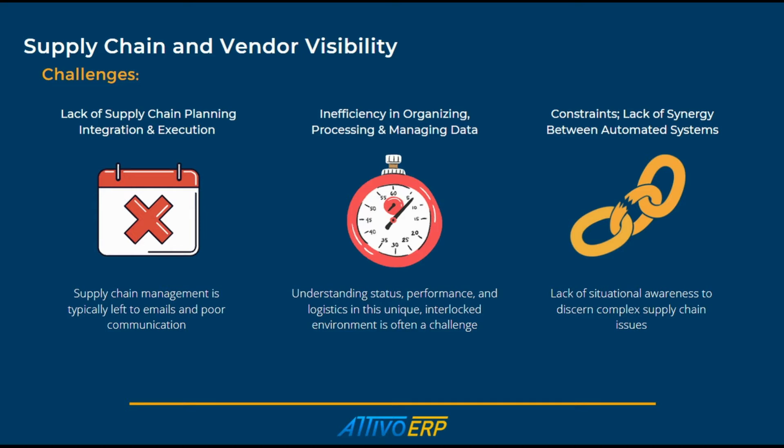One of the most daunting tasks can be aligning automated and manual systems. If one link in the supply chain is not accounted for, the price for the lack of synergy can be extremely expensive. Unexpected changes to the production supply chain or logistics can significantly impact your overall profitability. Manufacturers rely on an intricate ecosystem of suppliers, distributors, and logistics providers. SAP Business One allows for the vendor and supply chain visibility needed to manage these systems.